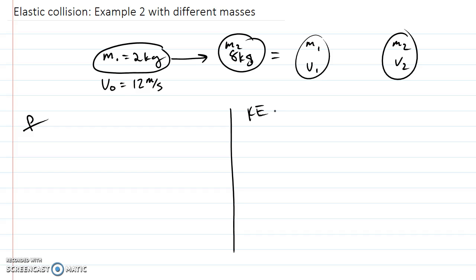All right, originally the momentum is mass times velocity, which in this case would be 2 times 12, which is 24. And in the end, we're going to have this, which is 2 times the velocity v1, whatever that is, and the mass of 8 times v2.